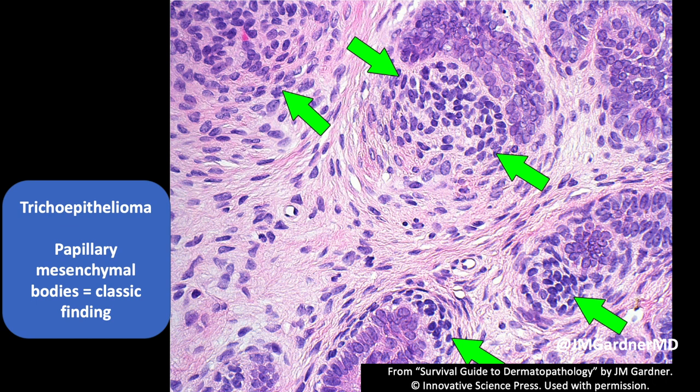In older, sun-damaged adults, it has to be a perfect trichoepithelioma for me to call it that — otherwise I want to be cautious and not miss a BCC. If I see papillary mesenchymal bodies, I call it trichoepithelioma. Some people believe BCCs can have these, but I've never seen a case that convinced me — I'm a doubter, though I recognize smart people disagree.